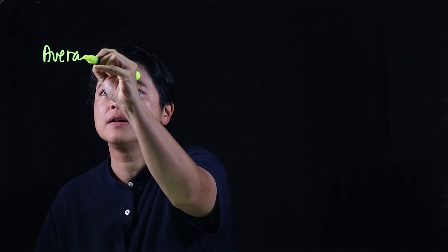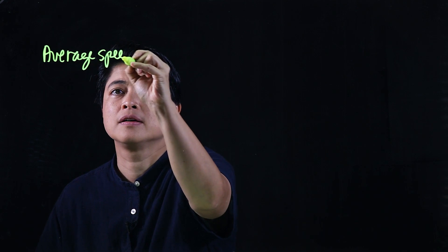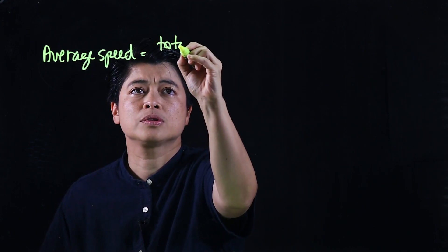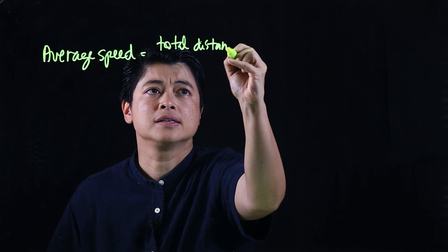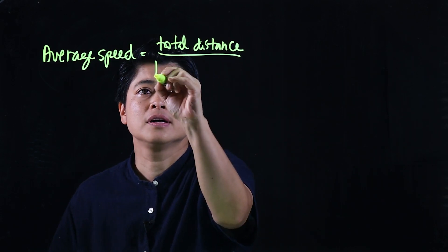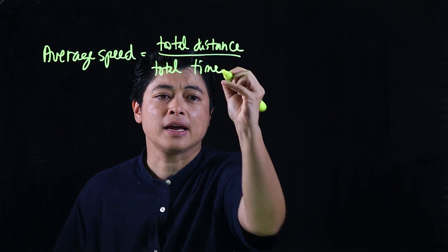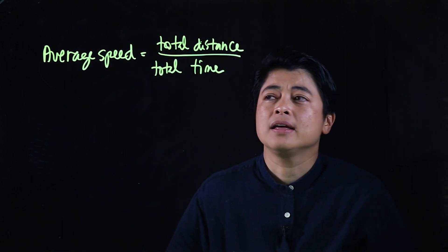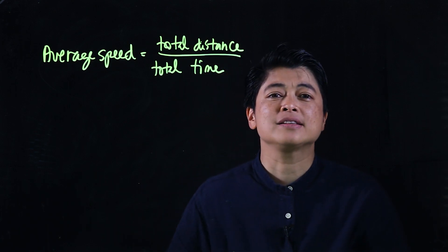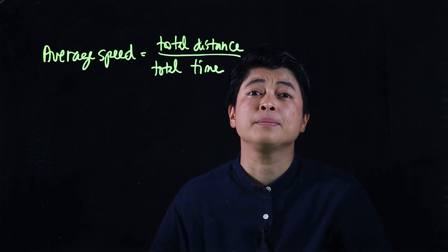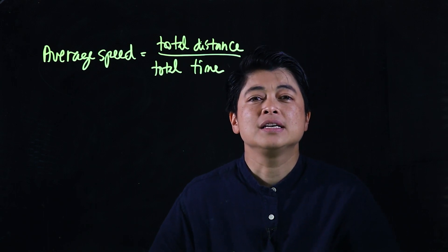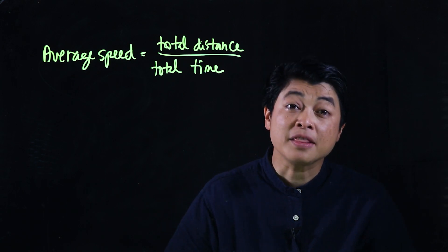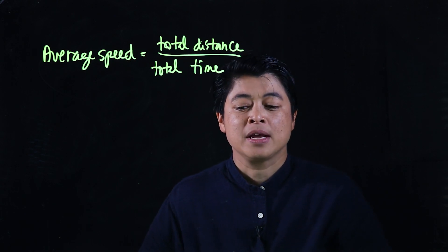Chapter 7, Lesson 2 is about average speed. The formula for average speed is equal to total distance over total time. When we say average speed, that's just the same thing as average rate — it all depends on the book you're using. Since we're using a Singapore Math book, they use the term 'speed'.